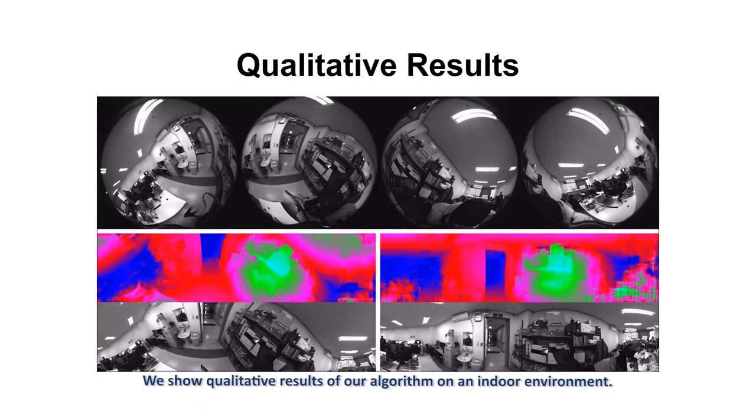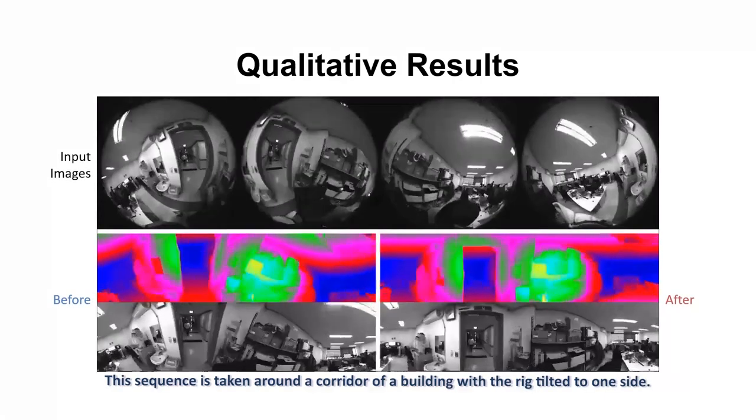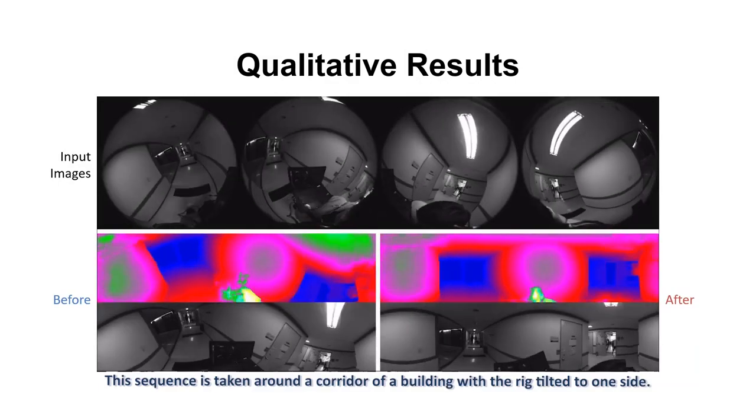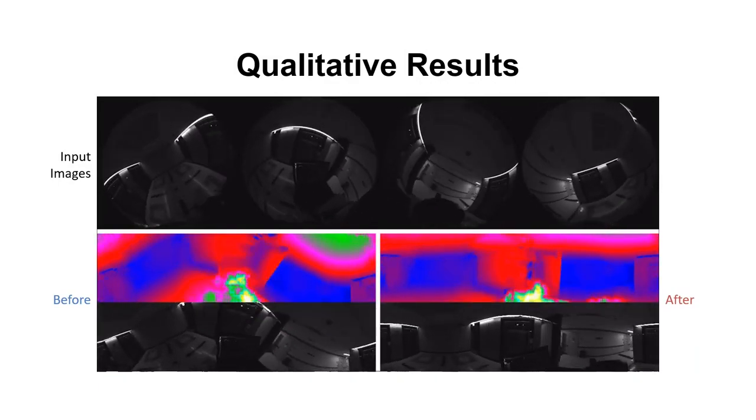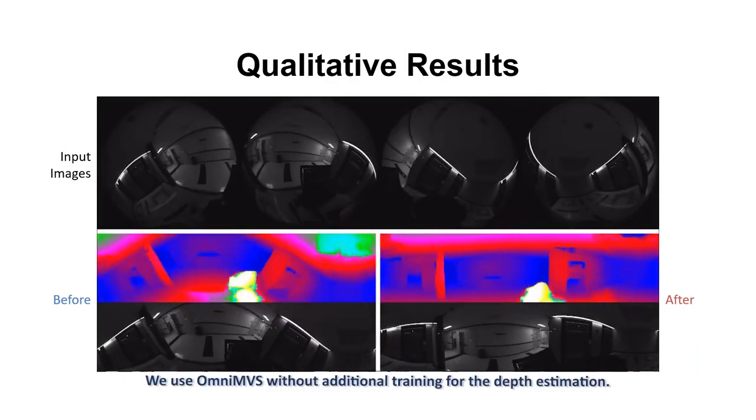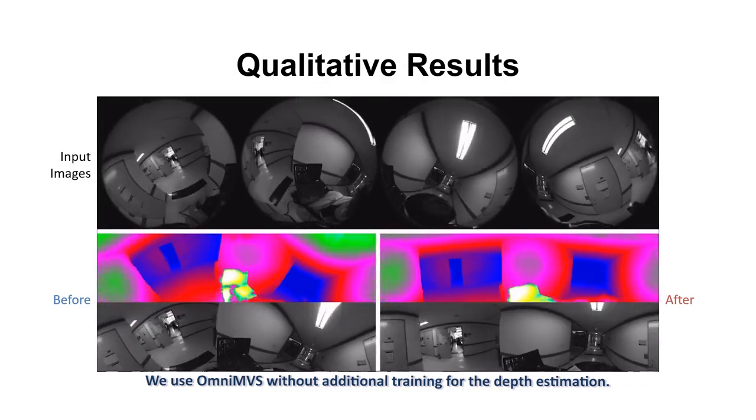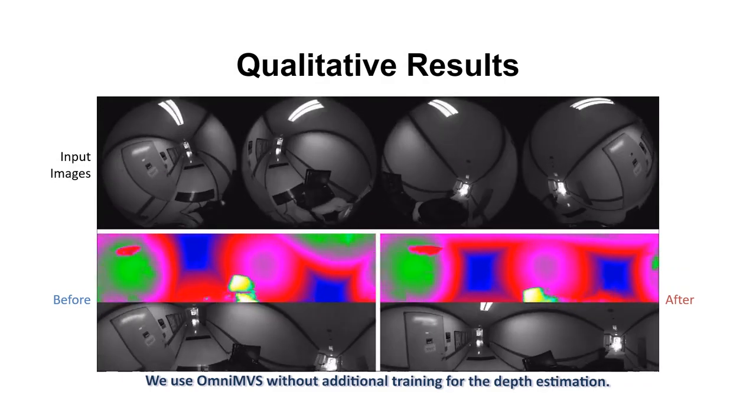We show qualitative results of our algorithm on an indoor environment. This sequence is taken around a corridor of a building, with the rig tilted to one side. We use OmniMVS without additional training for the depth estimation.